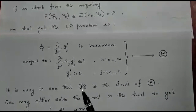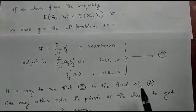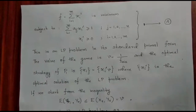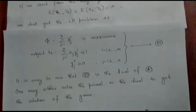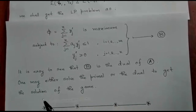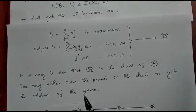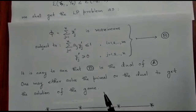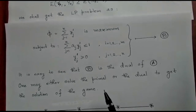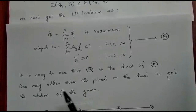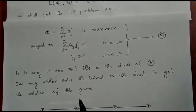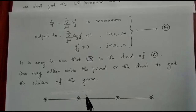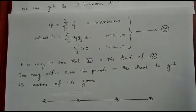Now it is easy to see that B is the dual of A. So in order to solve a game theoretic problem — that is a rectangular game problem — one may either solve the primal or the dual to get the solution of the game. Thank you.